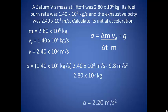Of course, g is 9.8 meters per second per second. And if we plug all of those in, we find the acceleration of the rocket to be 2.2 meters per second squared.